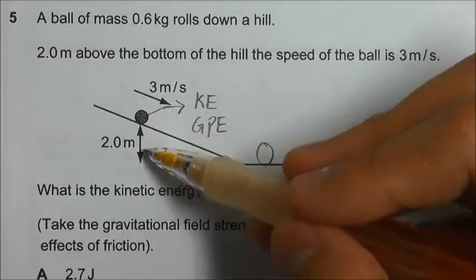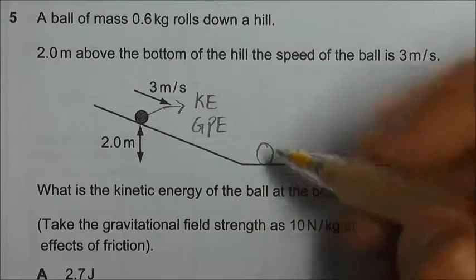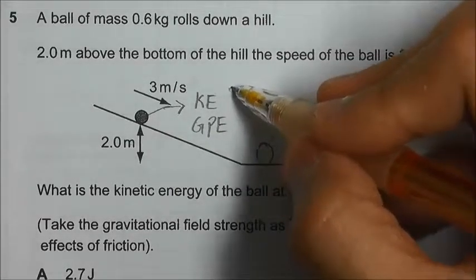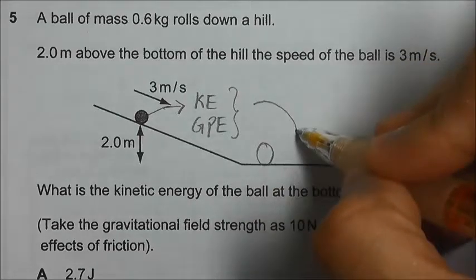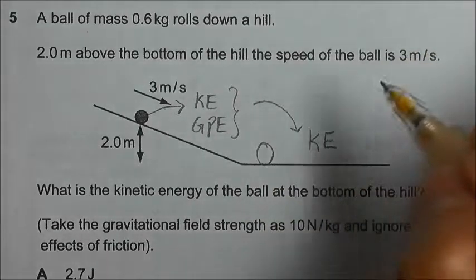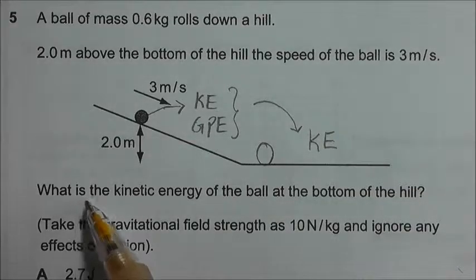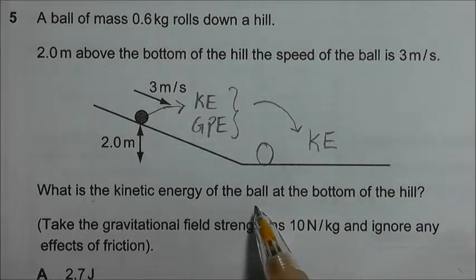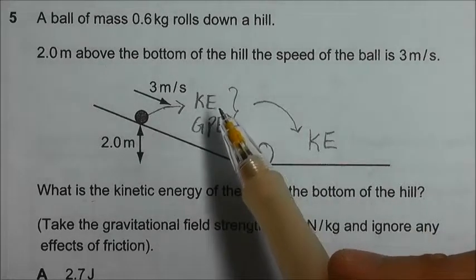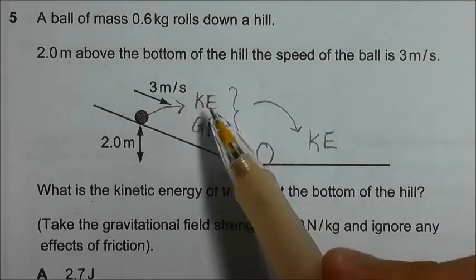it has no more height because the height is zero meters, so there will be no more gravitational potential energy. Basically, all the energy here has been converted to kinetic energy. We are asked what is the kinetic energy of the ball at the bottom of the hill. That is the sum of the KE and the GPE at the beginning. So now we can start. The KE here will be half